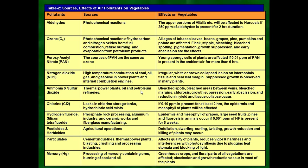Peroxyacetyl nitrate (PAN) has the same sources as ozone — fuel combustion and refuse burning. Young spoil cells of plants are affected; if 0.01 ppm of PAN is present in ambient air for more than six hours, the effect is very bad. Nitrogen dioxide (NO2) from high-temperature combustion of coal, oil, gas, and gasoline in power plants and internal combustion engines produces white or brown collapsed lesions and intercostal tissue damage near the leaf margin, with suppressed growth observed in many plants.